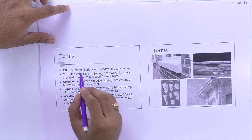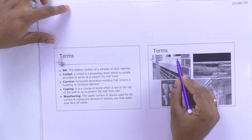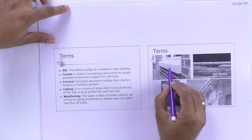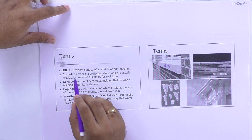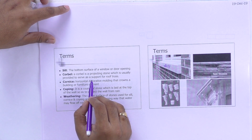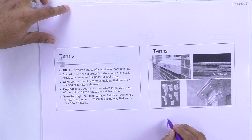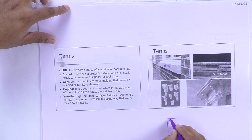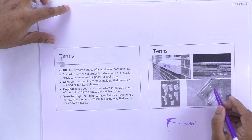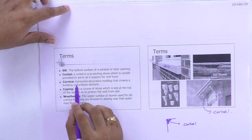The first term is sill — the bottom surface of a window or door opening. You can see in this picture that below the window we have the sill. The next one is corbel — a corbel is a projecting stone usually provided to serve as a support for a roof or similar structure, like a projection against a wall providing support.